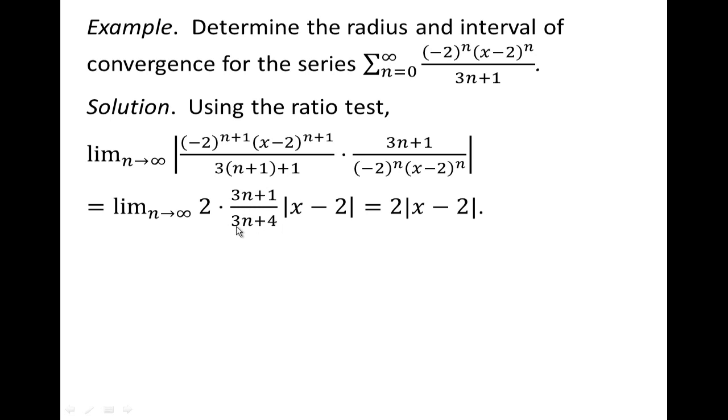n goes to infinity. This rational function approaches 3n over 3n, or 3 over 3, which is just 1. So we have 2 times 1 times that. Now we have a little bit more algebra to work with.